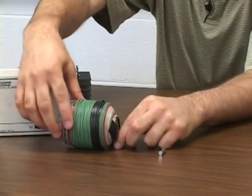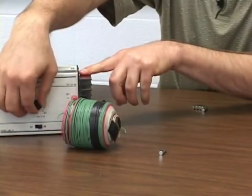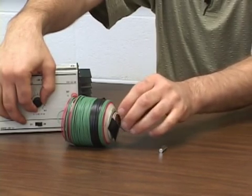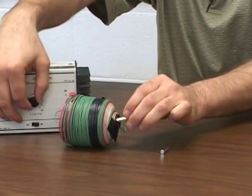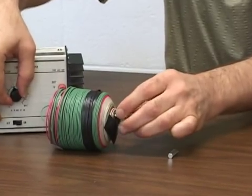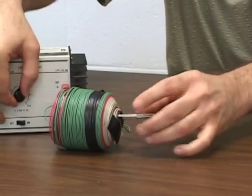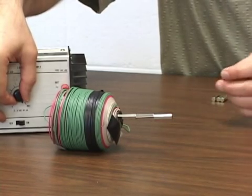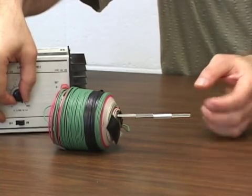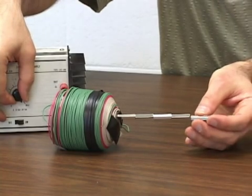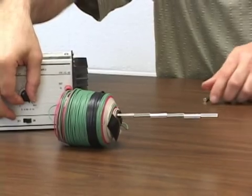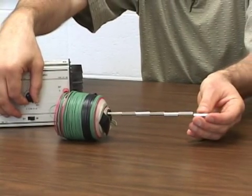If we now increase the current, not quite enough yet. There is more current and now we have a magnetic field strong enough to penetrate through several of these small metallic rods. And they all stick together. Six of them. And now seven.